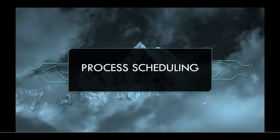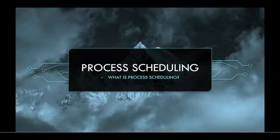Today I will talk about process scheduling in operating systems. Process scheduling is the activity of the process manager responsible for the removal of a running process from the CPU and selection of another process on the basis of a particular strategy. It selects an available process for program execution on the CPU to achieve multiprogramming and time sharing.